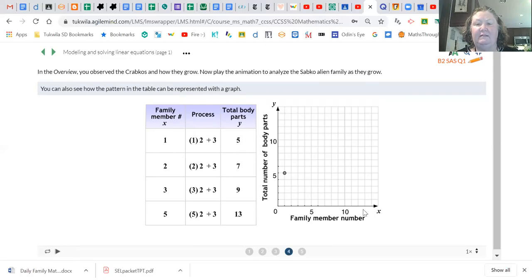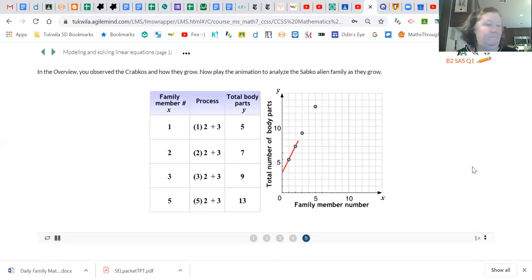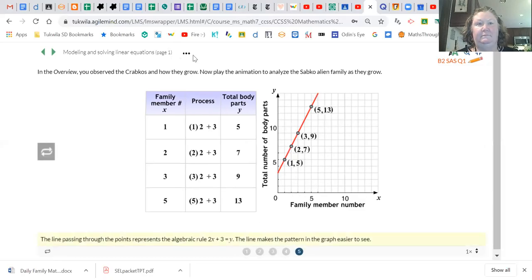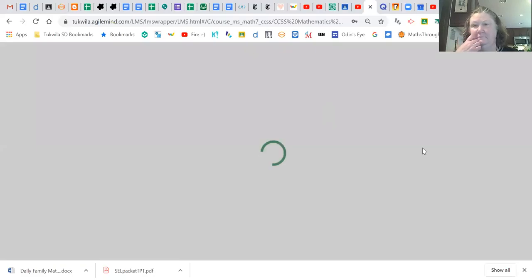Notice again, that's what's called an ordered pair. It comes from the x is the one, the y is the five. Here's the x axis and the y axis, so we went one over, five up. Notice it's making a straight line, and I'll bet you could look at this and figure out where family member four would be.